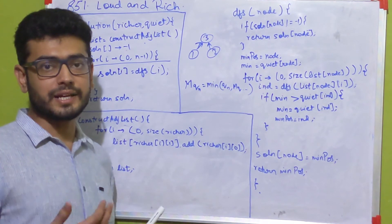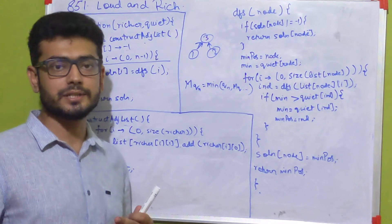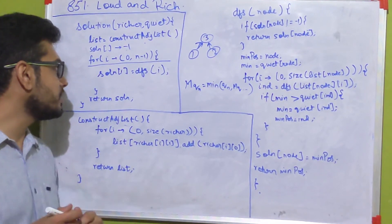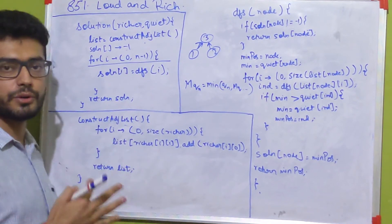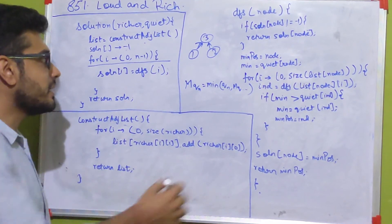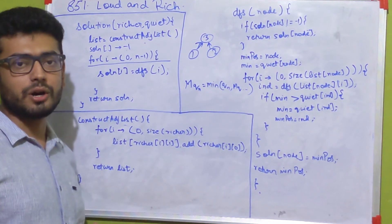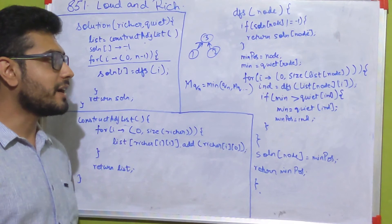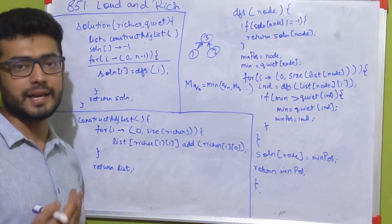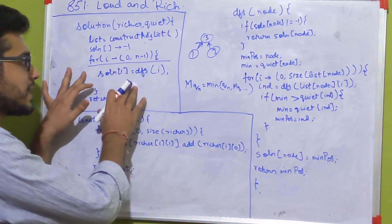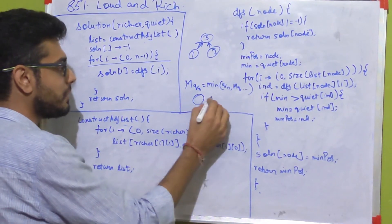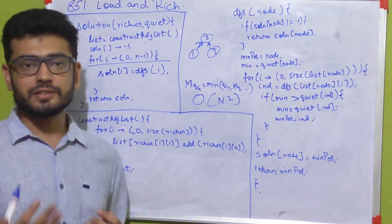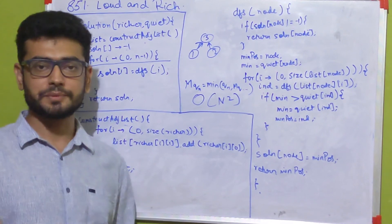This way we calculate the solution for all elements — for each person, who is the person at least as rich as them with the minimum quietness value. Analyzing the time complexity: we iterate across all people from 0 to n-1 (a loop of n), and with memoization, the DFS function is called only once per person. Inside the function there is another loop iterating across directly connected elements, which could be at most n. So there is a loop of size n with another loop of n inside, giving an overall time complexity of O(n²). This is an accepted solution on LeetCode. The Java code is available in the description link below. Thanks for watching.